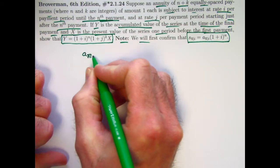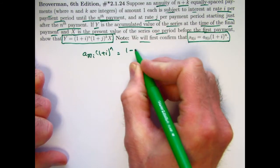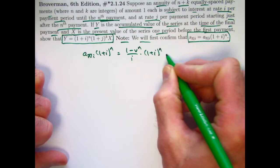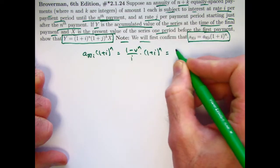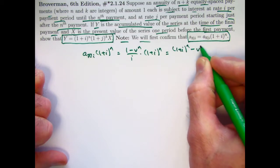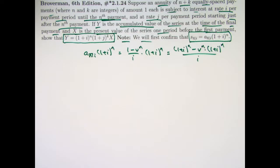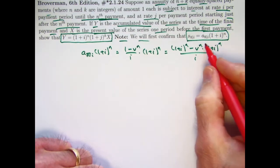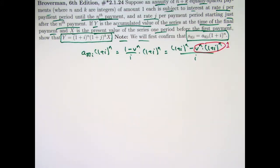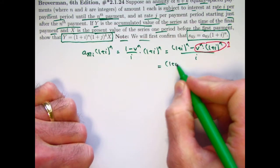That's pretty easy to do. We can use the formula for a_n,i: it's (1-v^n)/i, and I'm multiplying by (1+i)^n. Distribute this through on the top and I get [(1+i)^n - v^n(1+i)^n]/i, and I hope you realize very quickly that this thing is nothing but 1, because v is 1/(1+i). Therefore we get the formula for s_n.